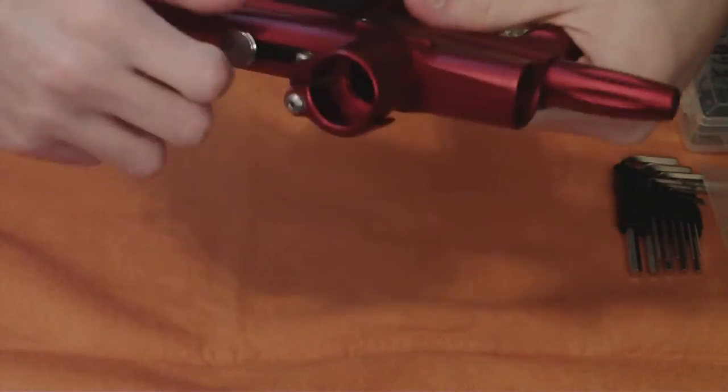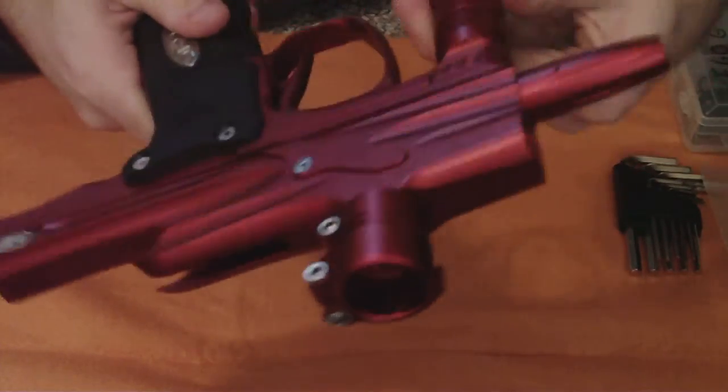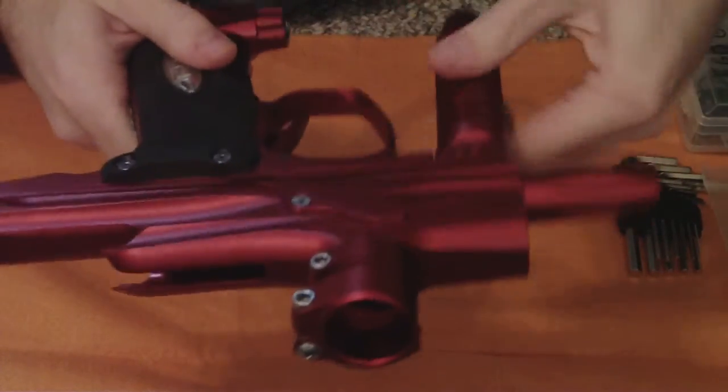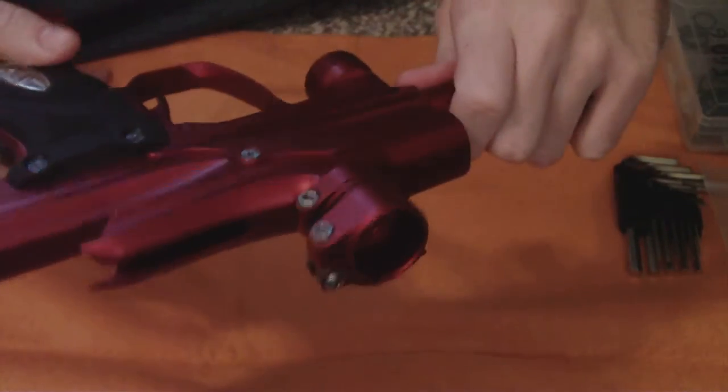The first thing you're going to want to do is pop the bolt pin. Simple enough, set that aside. The next thing you can do is take off your high pressure rig, and while you're at it, go ahead and take your low pressure rig off.